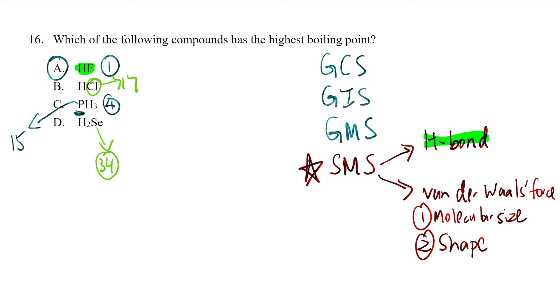So H2Se would be ranked number two. The one with 17 electrons, chlorine in HCl, will be ranked number three, and the last one will be PH3.